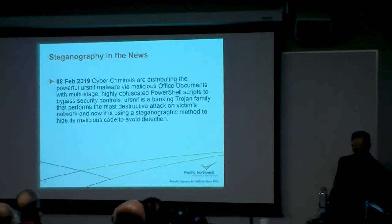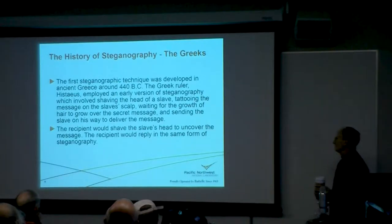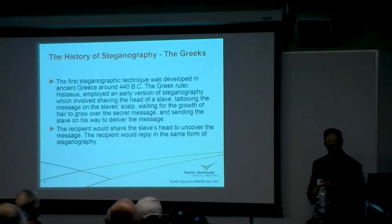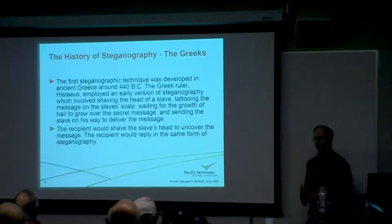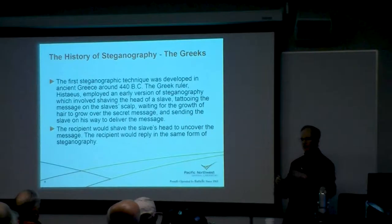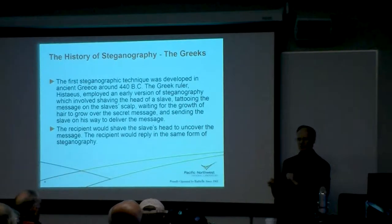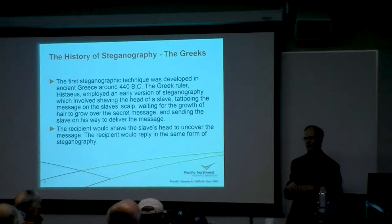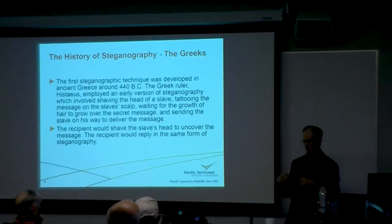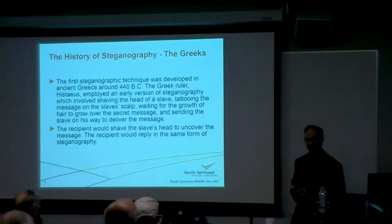Let's look at the history of steganography. One Greek ruler, Hestius, had a method for secret messages: he would take a slave, shave his head, tattoo the message onto the slave's head, wait for the hair to grow out, and then send the slave to where he needed to go. The slave presents himself, his head is shaved, and they read the message. This is going to be slow, but things moved slower in ancient Greece.